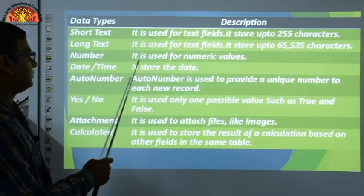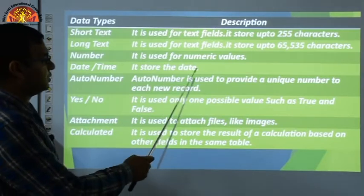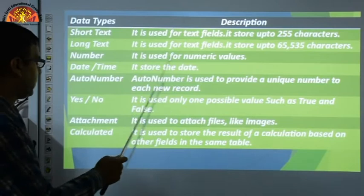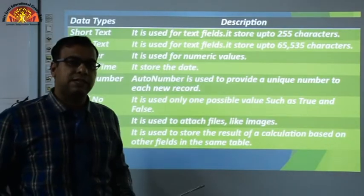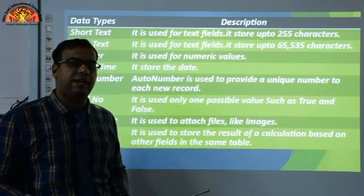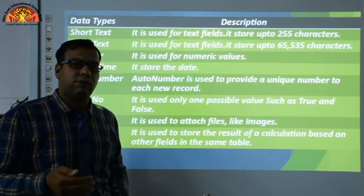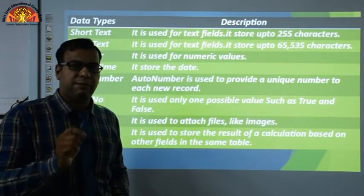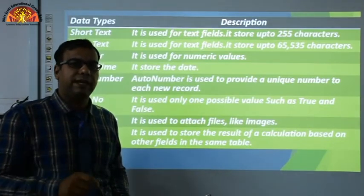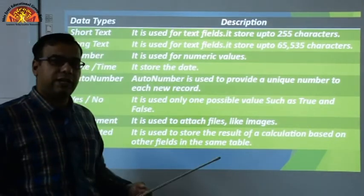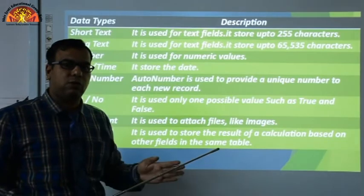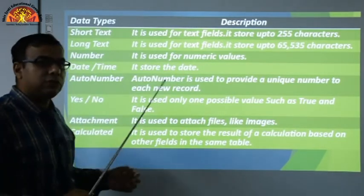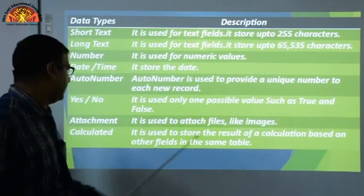Next is Auto Number. Auto Number is used to provide a unique number to each new record automatically. If you set a column's data type to Auto Number, numbers will be generated automatically — 1, 2, 3, 4 — as you move from row to row.